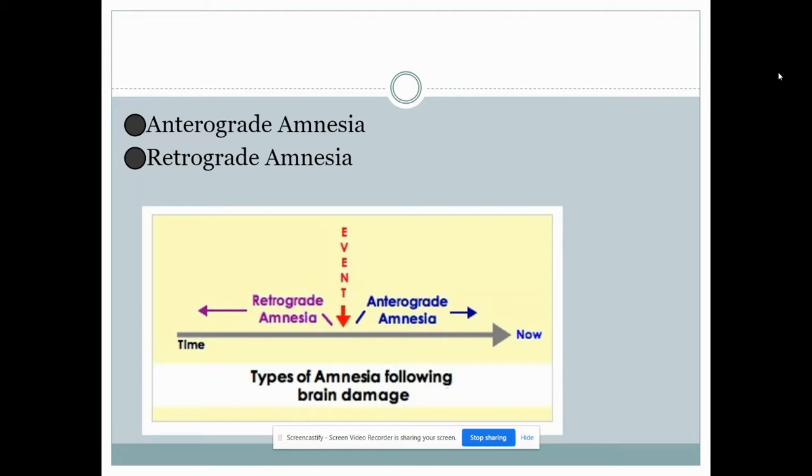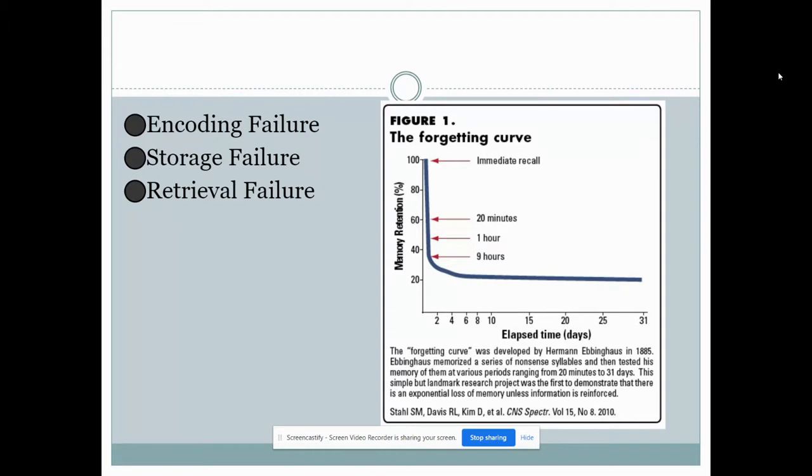But if a person experiences memory loss and they don't have brain damage, it's likely due to a failure in one of the three stages of memory. An encoding failure is when someone doesn't pay close enough attention. You may remember that if we don't pay attention to our sensory memory it is forgotten. So if someone doesn't pay close enough attention and then can't remember the details as a result of that, that's due to a failure in the encoding stage.